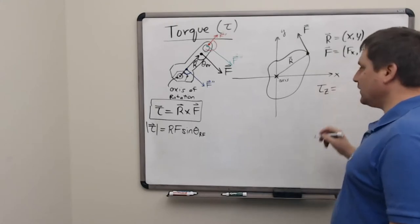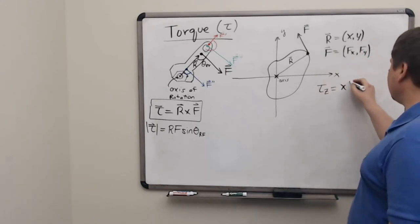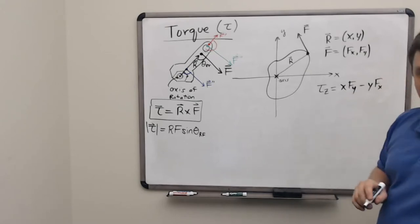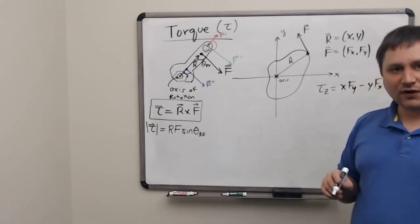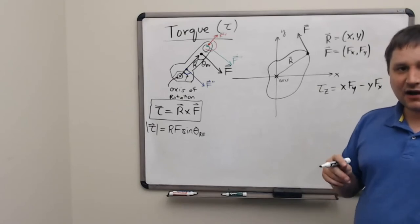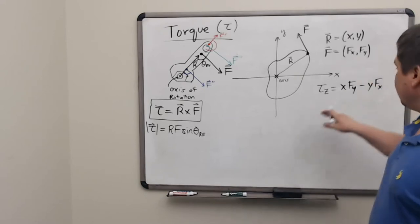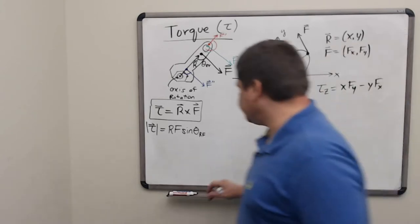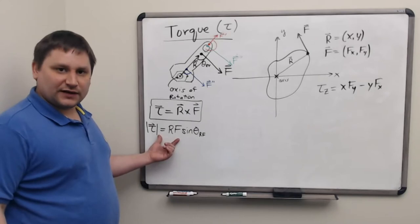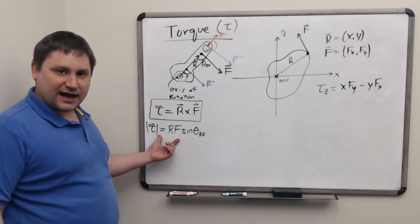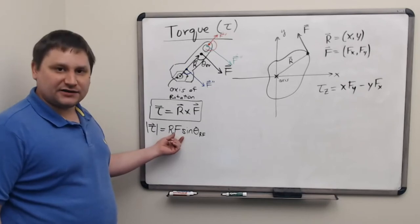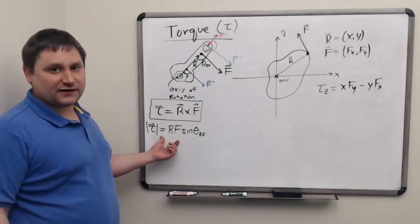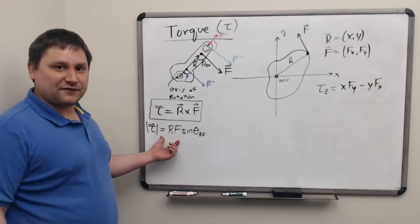The cross product between these two vectors then gives us, technically, the z component of a torque vector that would be equal to x times the y component of the force minus y times the x component of the force. So if our vectors for force and displacement from the axis are given in rectangular components or x, y components, then this formula is very efficient for computing the magnitude and sign of the torque. The formula over here is very useful if the displacement vector from the axis and the force are given in terms of magnitudes and directions. But the downfall of this formula is that it cannot tell us the sign of the torque, whether it's clockwise or counterclockwise. That we have to figure out from the diagram.